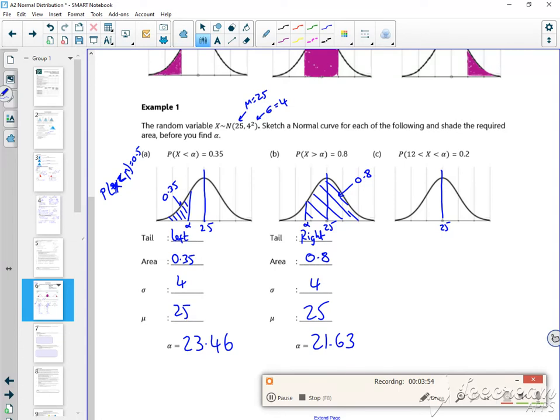Now this one's a little bit more tricky because I don't know this unknown, and it's not like a central thing. But if I see it as between 12 and a value is 0.2, if I find out what the 12 is, I can add on the 0.2.